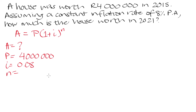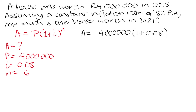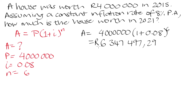Our n, the number of years, is 6, because 6 years have elapsed from 2015 to 2021. Plugging our values into the formula: A = 4,000,000 × (1 + 0.08)^6. Using a calculator, we get A = 6,347,497.29. So that is how much our house is worth in 2021.